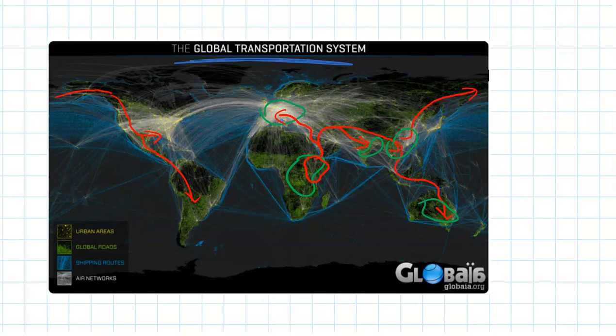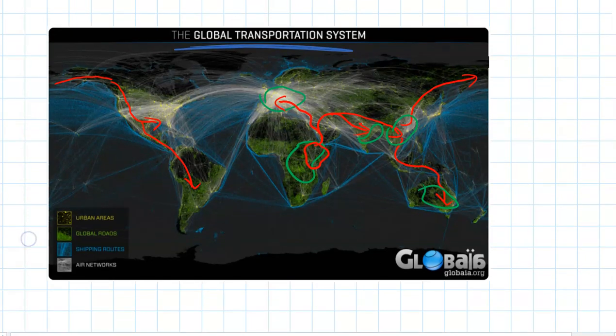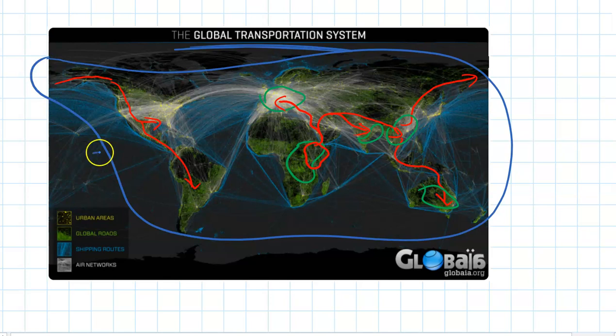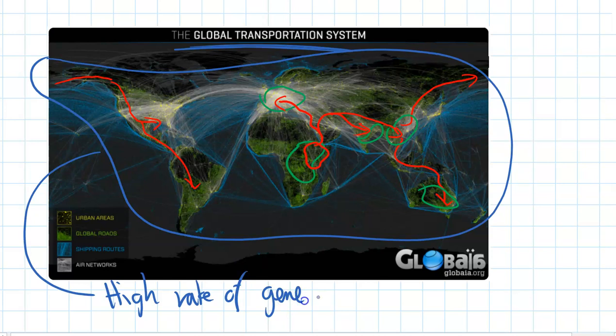That means there's a huge amount of gene flow in the human population today. So whatever evolution had started in Europe and Asia among populations that were really isolated, now we're basically considering the whole human population in the world to be one population. So we've basically stopped our human evolution into separate species. We have a high rate of gene flow, and so we've stopped our speciation basically.